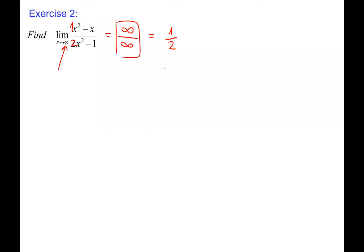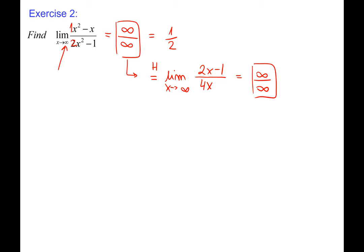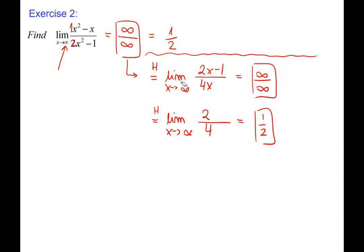Applying L'Hôpital's Rule: the derivative of the top x²−x is 2x−1, and the derivative of 2x²−1 is 4x. At infinity this is still infinity over infinity, so we apply L'Hôpital's Rule again. The derivative of 2x−1 is 2 and the derivative of 4x is 4, giving 2/4 = 1/2. Same answer, but the algebraic approach is faster.